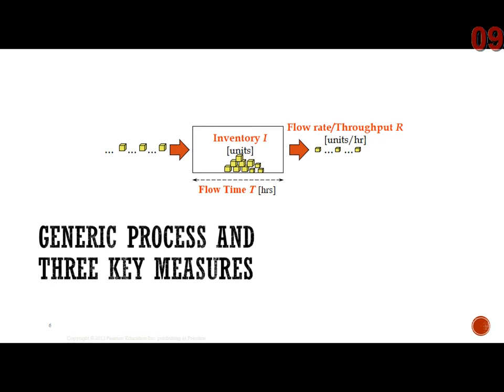Using a bicycle production line as an example: raw materials come in on the left as inputs. They enter the process and are transformed through all the steps. At any point I can take a snapshot of raw materials, work in process, and finished bicycles that haven't left — that's inventory. The number of bicycles leaving the factory per hour is throughput, and from the time raw materials enter until they exit as finished goods is flow time.